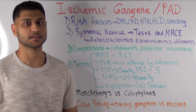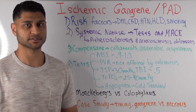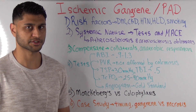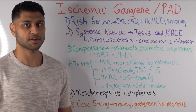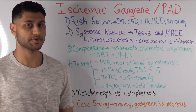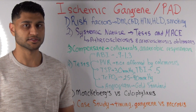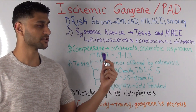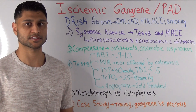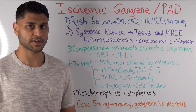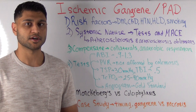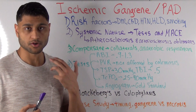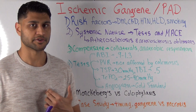MACE, or M-A-C-E, is a major adverse cardiovascular event, such as an MI or myocardial infarction. The reason a low TBI or an ABI in the lower extremity is associated with MACE is because atherosclerosis is a systemic process. The same disease process affecting the lower extremity can also affect your renal arteries, your carotid arteries, and your coronary arteries.